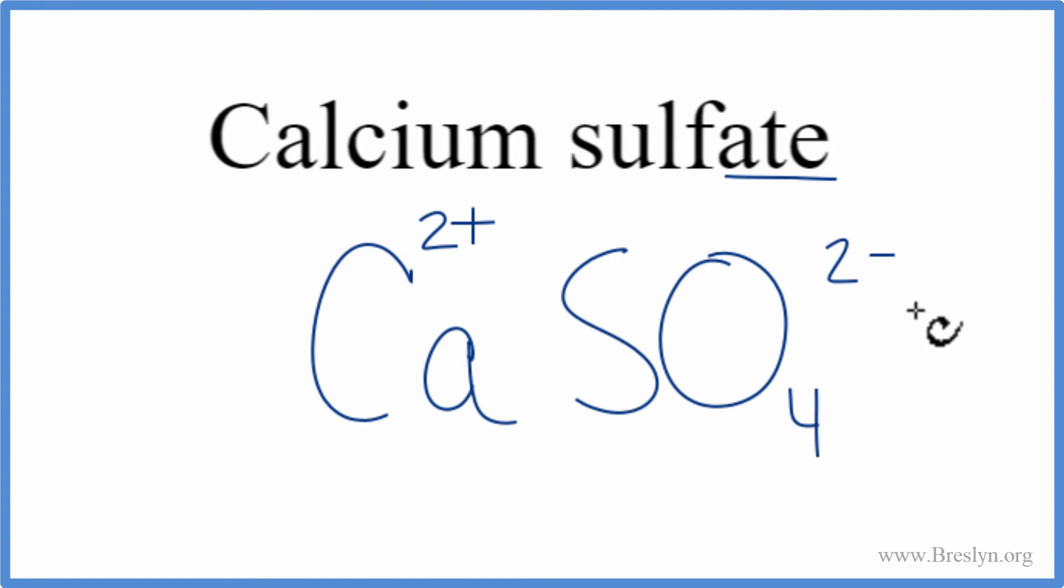2-plus and 2-minus, that adds up to zero. That gives us a net charge of zero, so this is the formula for calcium sulfate. We can clean it up. And that's it.